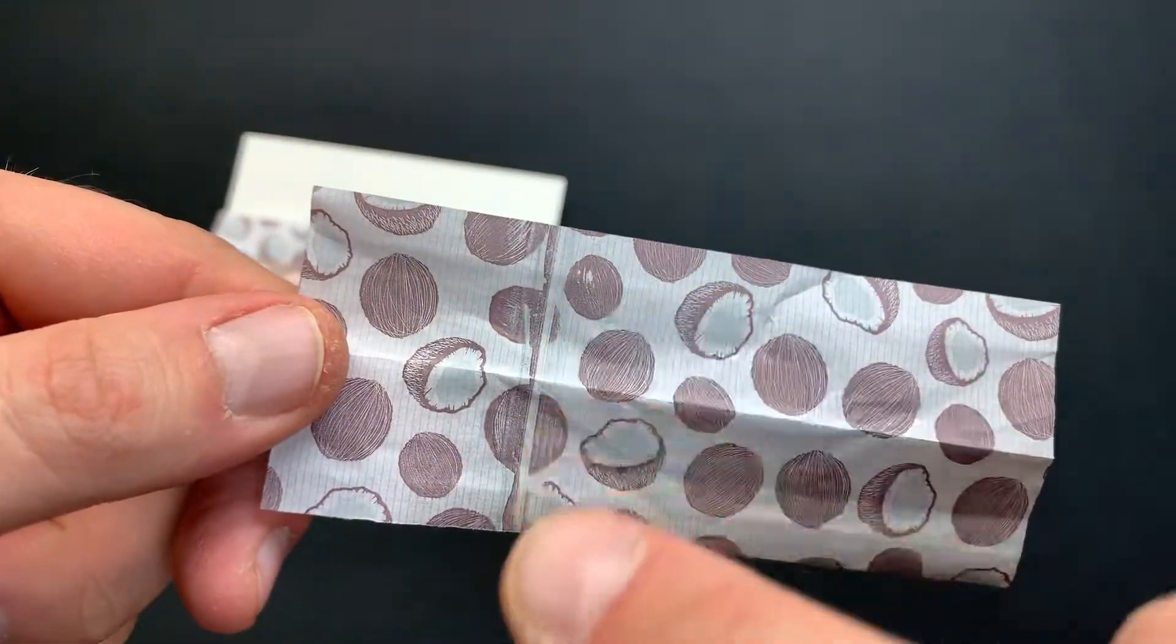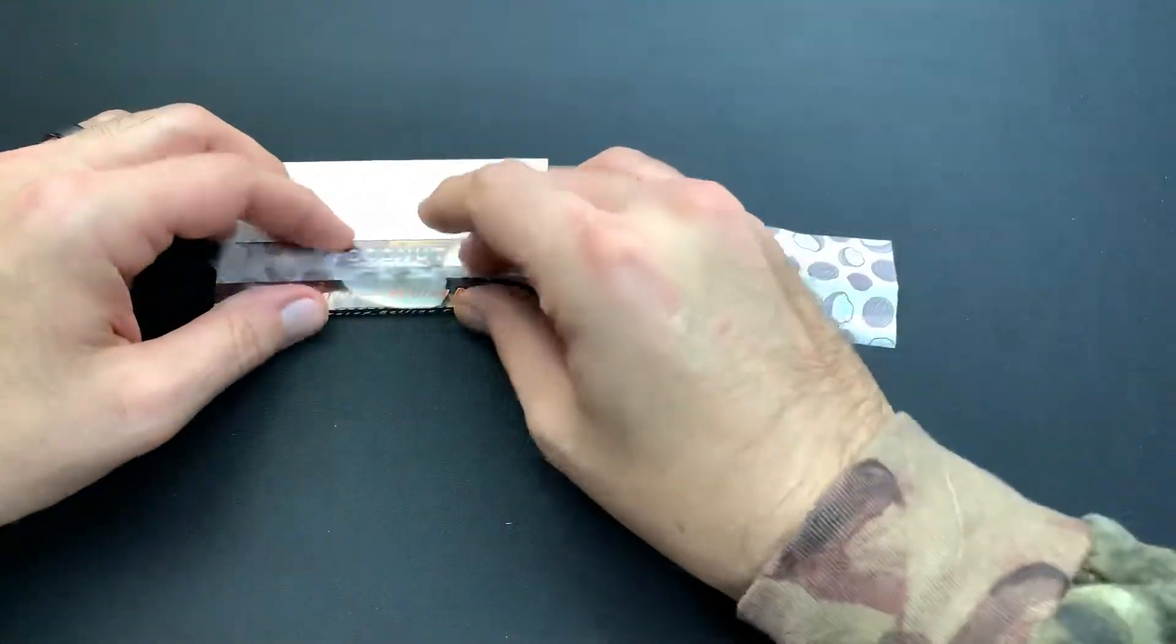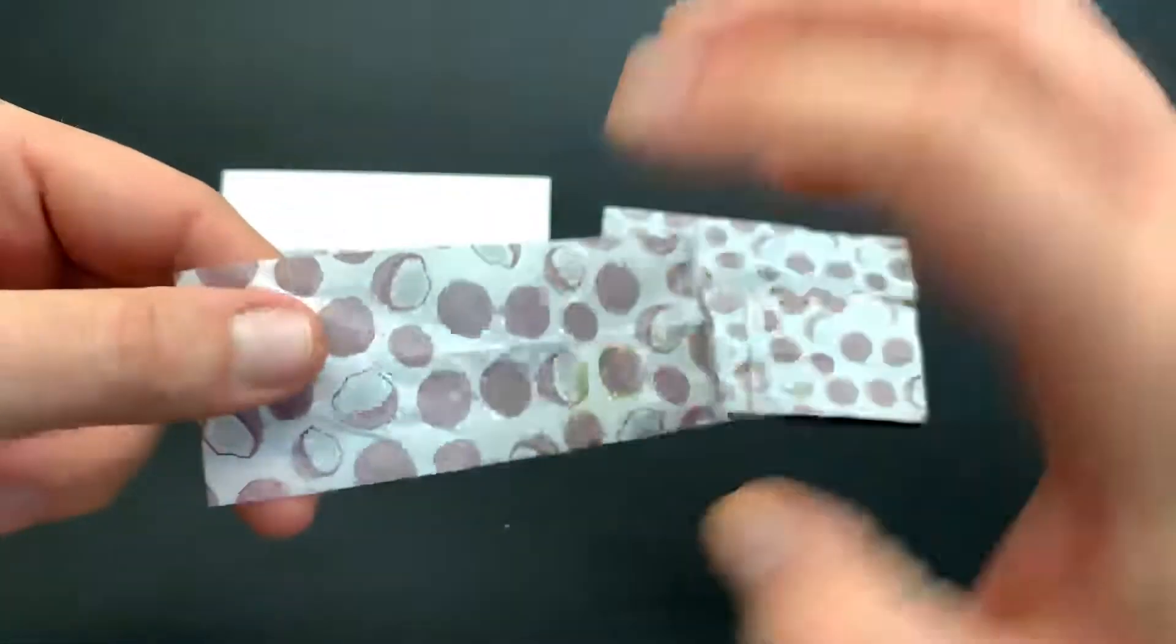But what do we have? We got the print error. There is the stripe right down the middle. I mean look at the quality they put into this and you still have these print errors. Here we are again, another print error down the middle.